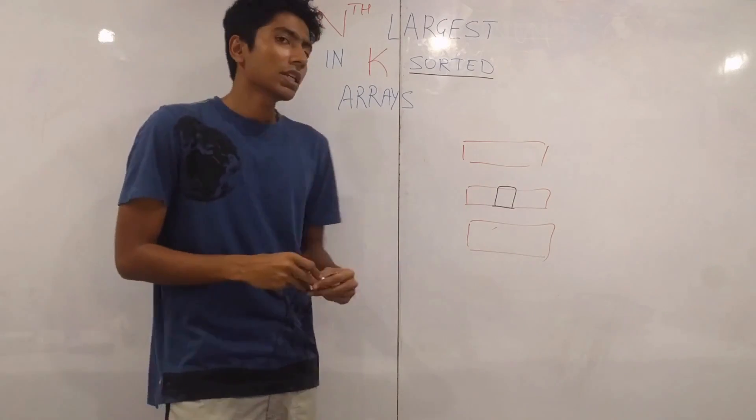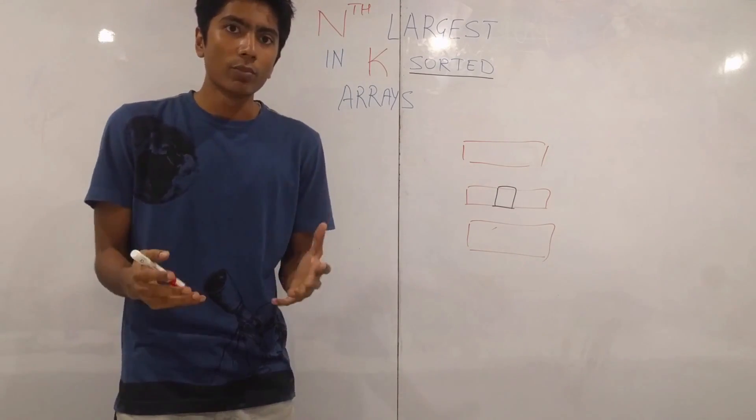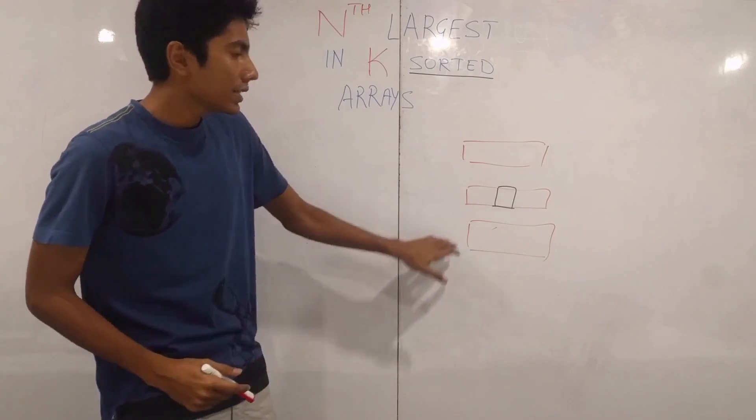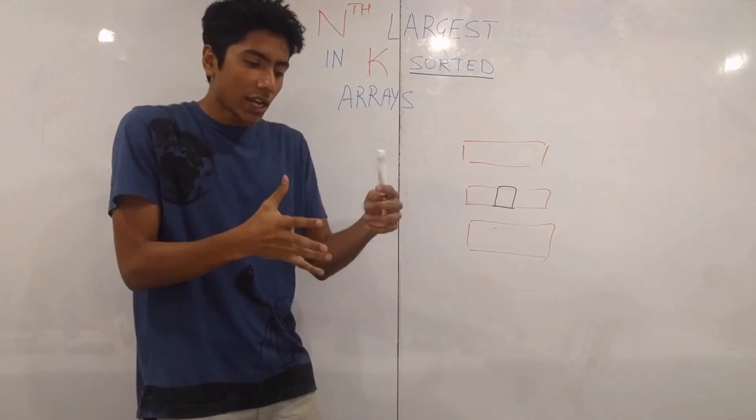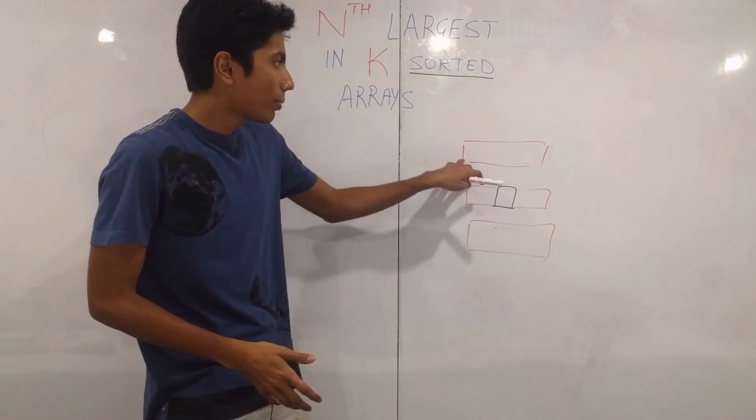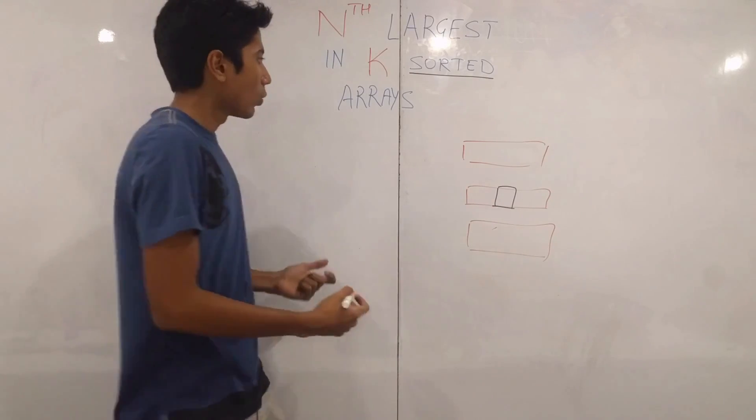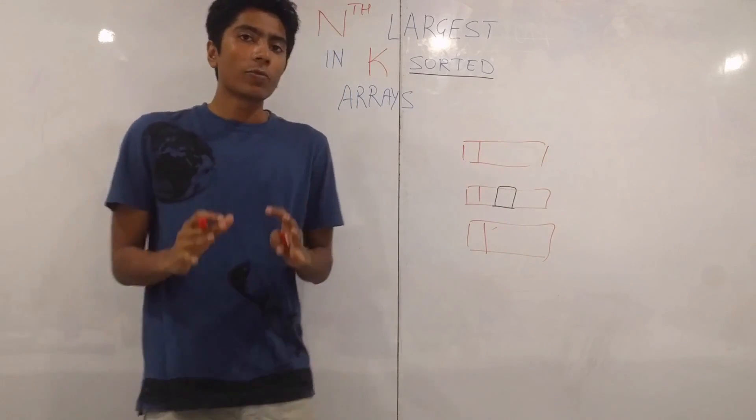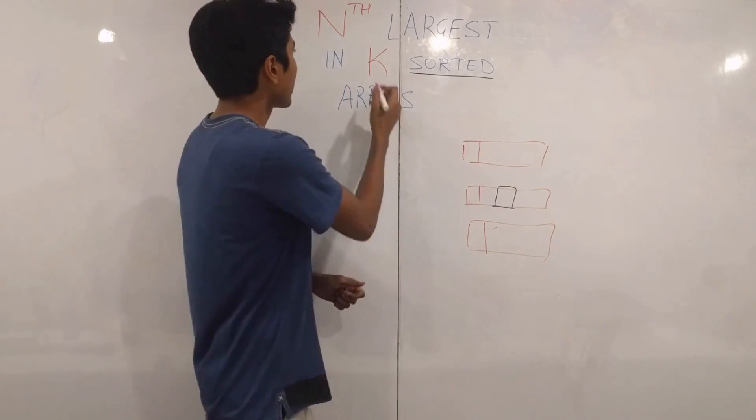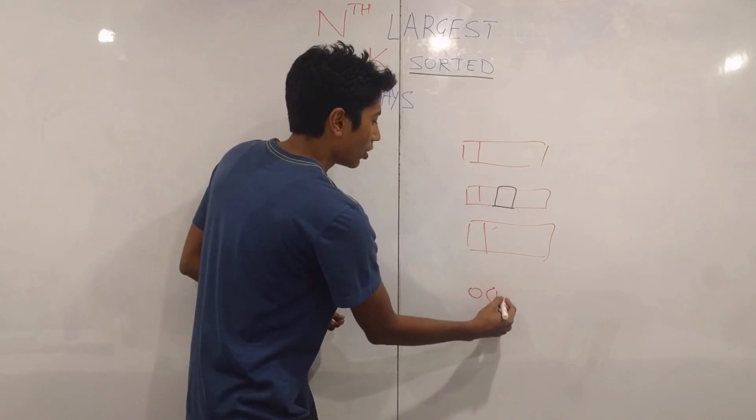Another approach that you can use is actually taking a small procedure from merge sort. It's taking all these arrays together and then finding the kth largest by just checking what's at the top of these arrays. What I mean by that is let's take the first element of each array.